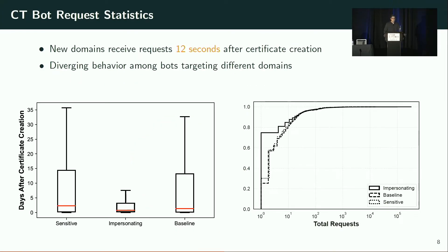Observing the statistics on the requests we received, alarmingly we found that new domains receive requests from these bots in as little as 12 seconds after certificate creation. This means any website administrator setting up a website should ensure all security mechanisms are in place before the certificate is created. We also observed diverging behavior among bots targeting different groups — for example, bots targeting impersonating domains send a single request to that domain almost 80% of the time, whereas bots targeting the other two groups exhibit the same behavior only about 30% of the time.